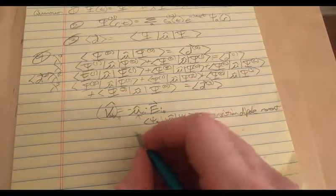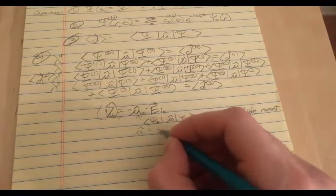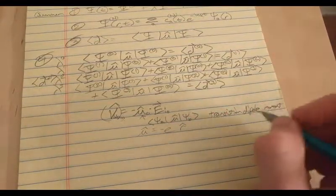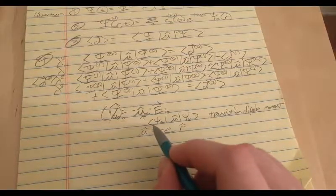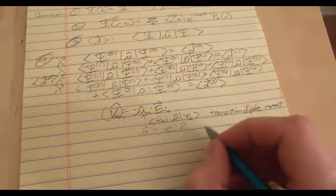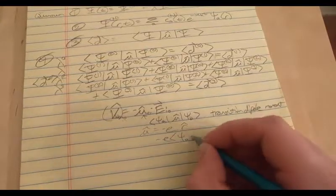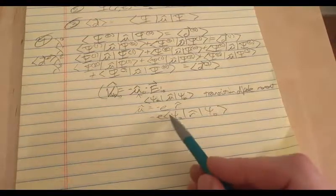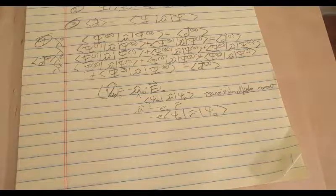You can write the dipole as the charge times the distance between the charges R, so this value would equal ⟨ψ_A|(-eR)|ψ_B⟩, which is the expectation value of the position — that might be something a little more familiar.